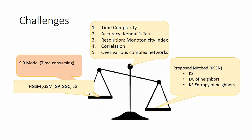To address these challenges, the KSEN method proposed in this paper incorporates three important network features: K-shell index, node degree within a neighborhood, and entropy calculated based on neighbor K-shell values.